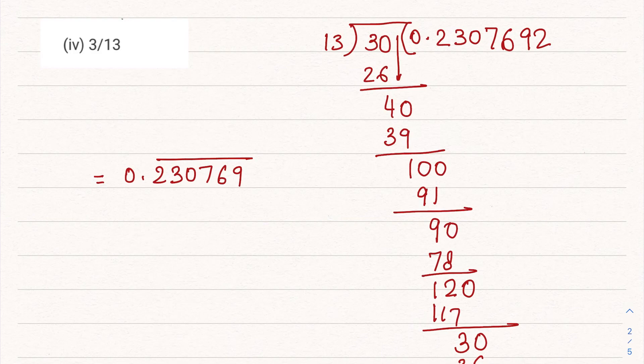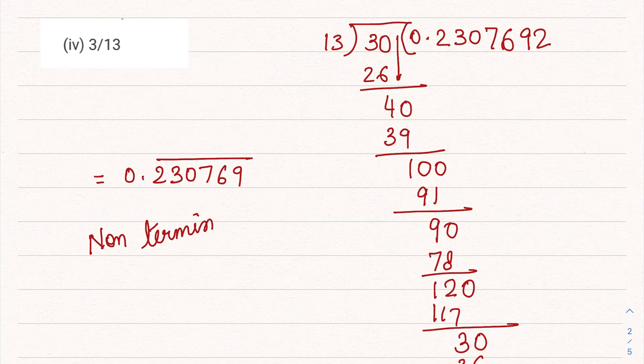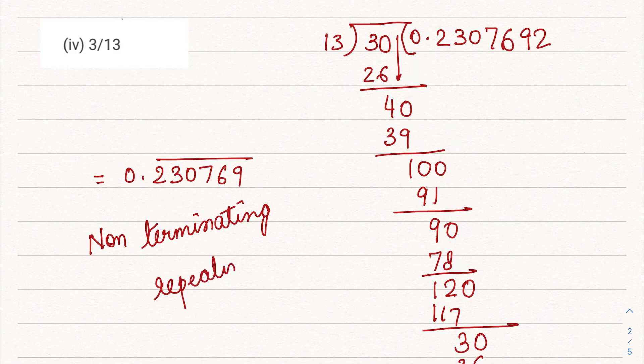So definitely this one is non-terminating. Its remainder never becomes zero. And this is also repeating because some numbers are continuously repeating.